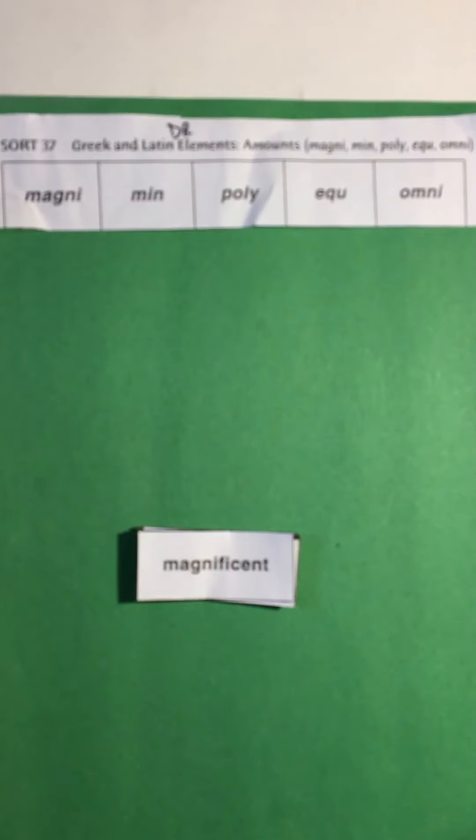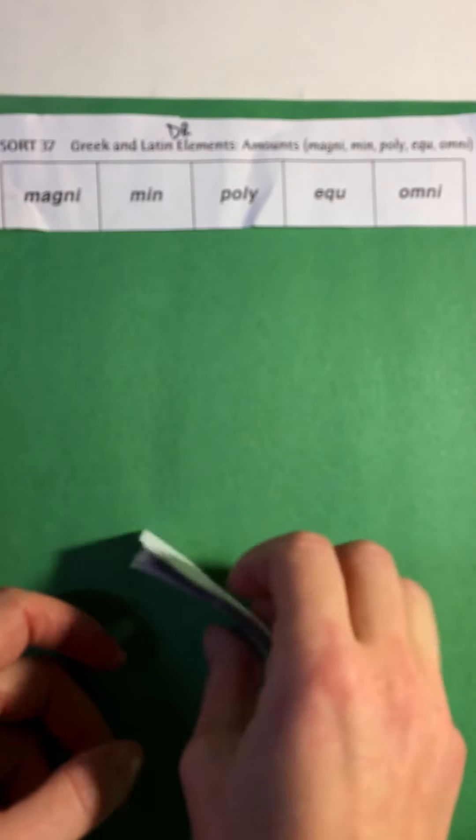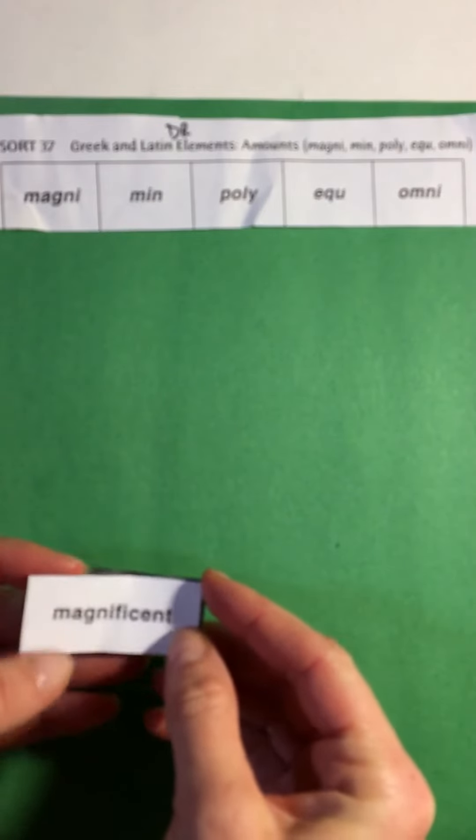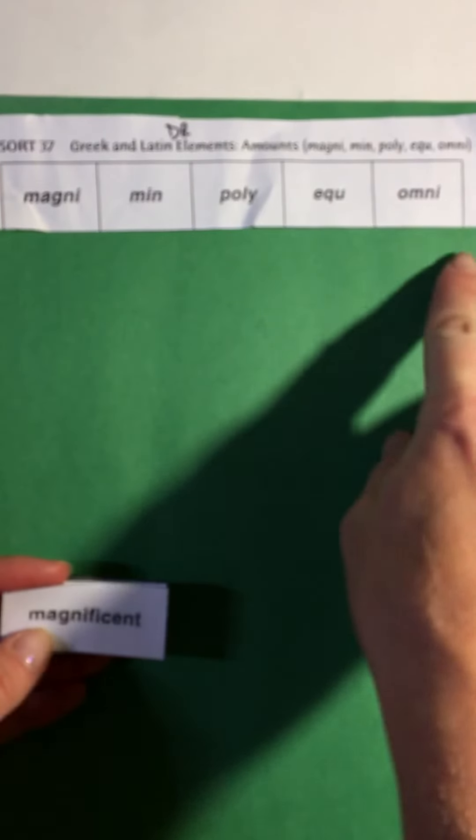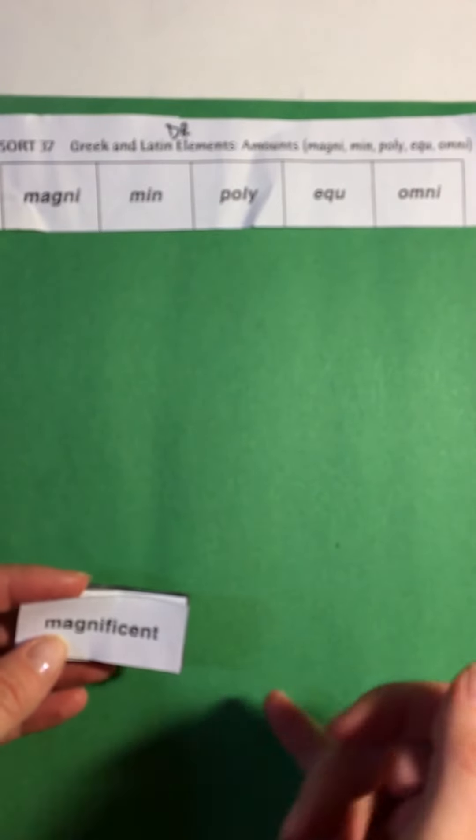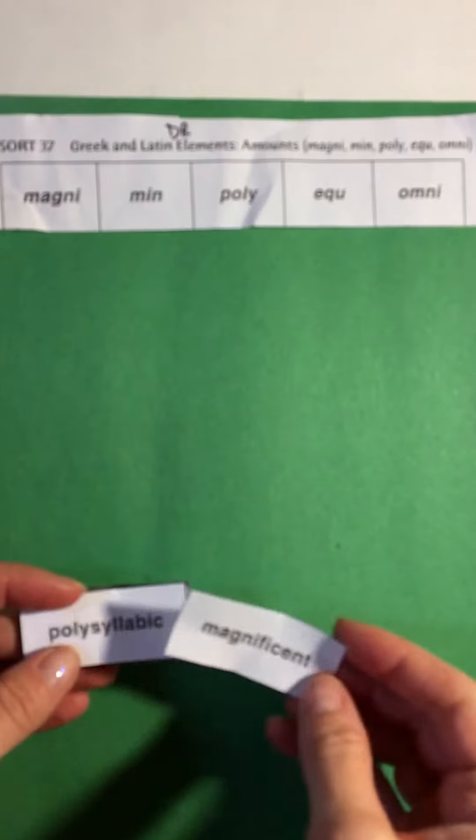DR sort 37, Greek and Latin elements with amounts. Let's sort these out and then talk about what these things might mean. We're going to start by just doing a pattern sort if it has that in it and we put it there. As you can see we have a lot of headers, so you're going to want to either spread them out or as you cut them out, cut down the line and cut off these extra white parts off the side.